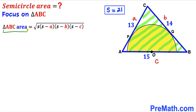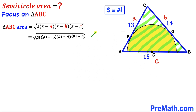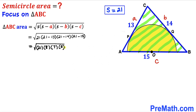Now we calculate the area of triangle ABC. Substituting S equals 21 into Heron's formula: S minus A is 21 minus 13, S minus B is 21 minus 14, and S minus C is 21 minus 15. This gives us 8, 7, and 6 respectively.